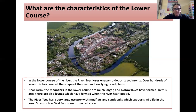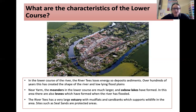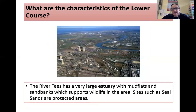This is Yarm. In the lower course of the river, the River Tees loses energy and deposits sediment. Over hundreds of years, this has created the shape of the river and low-lying floodplains. Near Yarm, the meanders in the lower course are much larger, and oxbow lakes have formed. In this area there are also levees, which form when the river floods. The River Tees has a very large estuary as it goes out to sea, with mudflats and sandbanks which support wildlife, and sites like Seal Sands are protected areas. You can see lots of industry here, but there are also parts that support lots of wildlife.